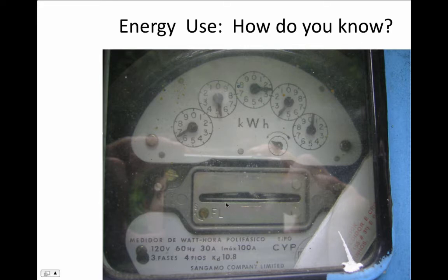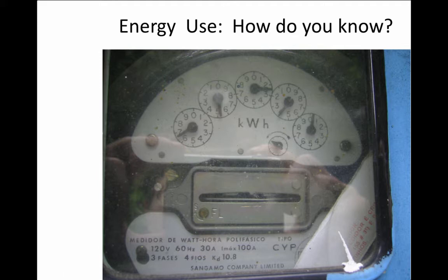We have digital readouts on toothbrushes these days, so we could do a lot better. Why not have a device right by the clock so that when you go to bed you can look and say, I'm still using 500 watts in the house — what could be using 500 watts? You could go and find that and shut it off. Because with only one point of feedback once a month, it's really hard to know what's going on.